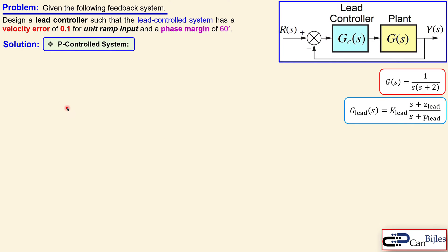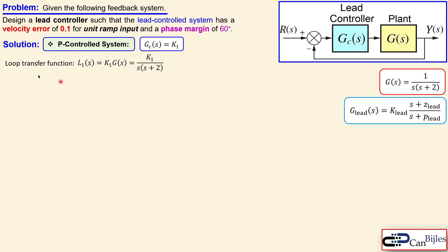We start with the P-controlled system as our reference and see why it will not meet this design. With just a proportional controller K1, the loop transfer function L1 equals K1 times the plant, giving the complete loop expression.